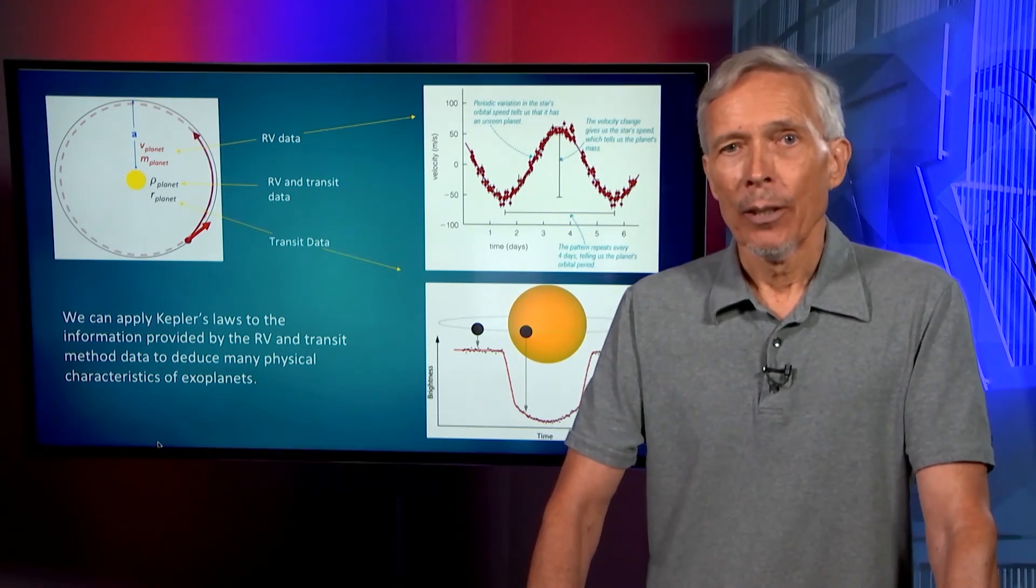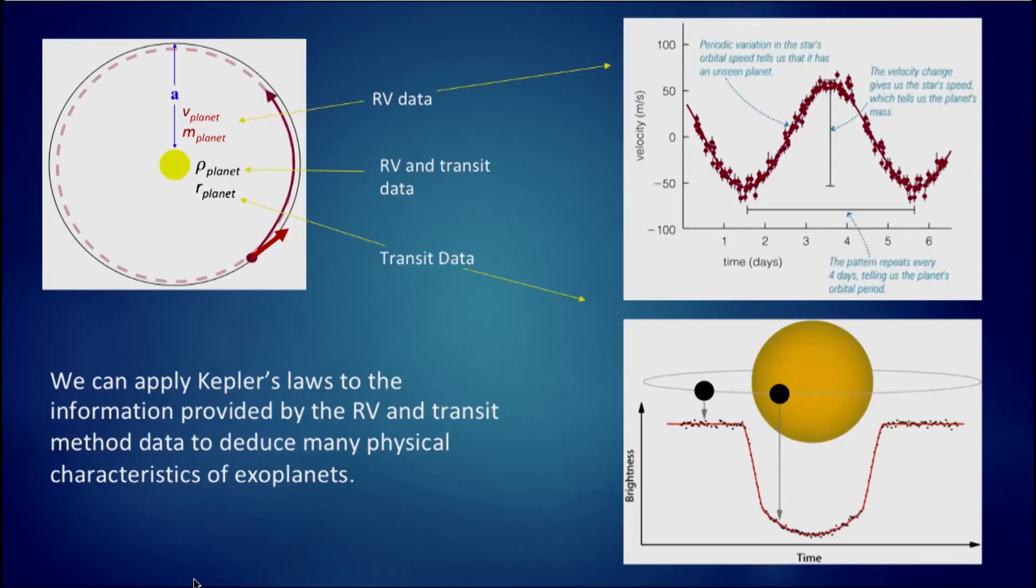Given this information, the radial velocity curve and the transit curve, we've learned some important things about exoplanets and taken the next step along the road to characterize them in the zoo of possible planetary configurations. We've seen that we can combine information and use the physical characteristics of an orbit, and Newton's laws, and Kepler's laws of motion, to understand more detail about the planet.